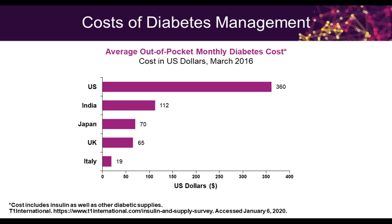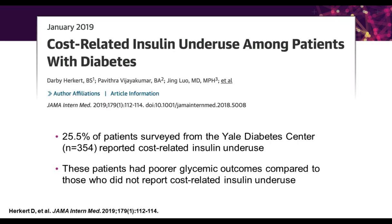If you look at the cost of diabetes management overall, this is the monthly average out-of-pocket cost for patients in the United States — it's pretty high at $360 per month per patient. That's a lot of money for many patients: older patients on fixed incomes, college students, young adults who are trying to start a family. And it's a lot more money than it is in many countries around the world. Cost is a very significant issue in this country.